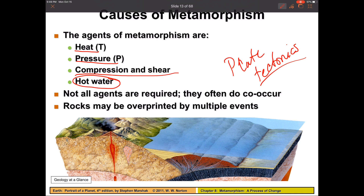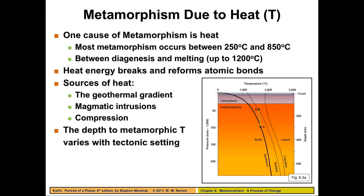What can become very complicated is that we can have a metamorphic rock that gets re-metamorphosed, and then it can get re-metamorphosed again and again. That sometimes gets very difficult when you're trying to ascertain what happened first, second, or third to these rocks. Let's take a look at each one of these agents.